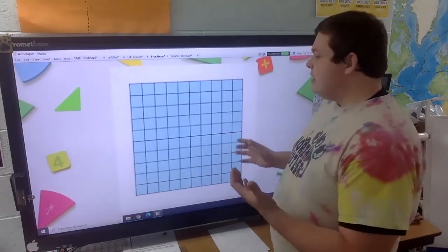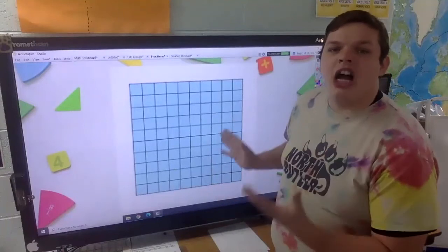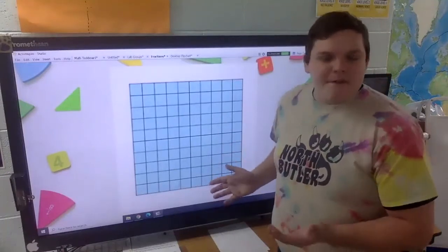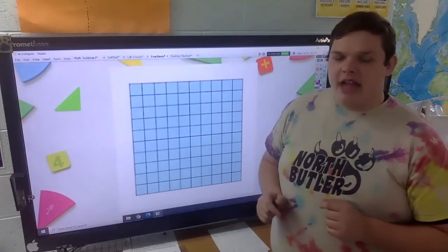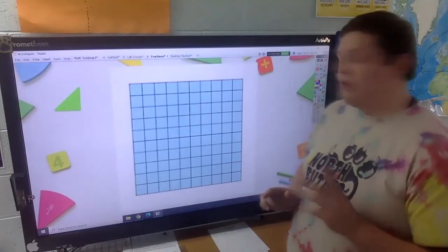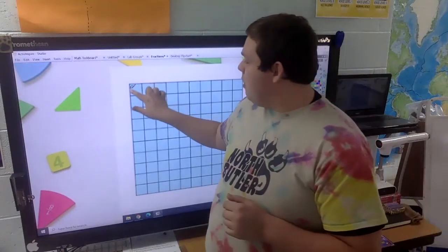So this is a block cut into 100 pieces. It's like a fraction, but I have not shaded in any pieces yet. So if I shade in, for instance, one square.